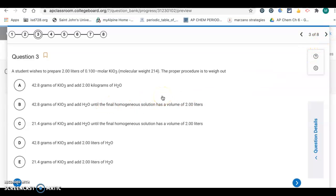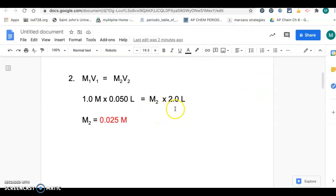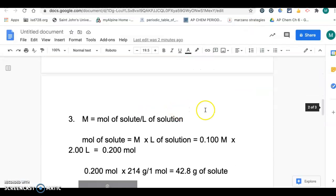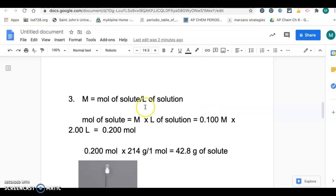Question three. A student wishes to prepare two liters of 0.100 molar KIO3, and here's its molecular weight. That's the molar mass. The proper procedure to weigh this out is going to be one of those. This is another calculation where we have to figure out the mass.